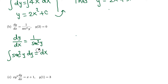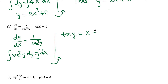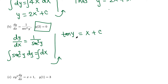Now we integrate both sides. The anti-derivative of secant squared is tangent, and the anti-derivative of 1 is x plus c. We can either solve for y first and then find c using the initial condition, or apply the initial condition first to determine c and then solve for y.